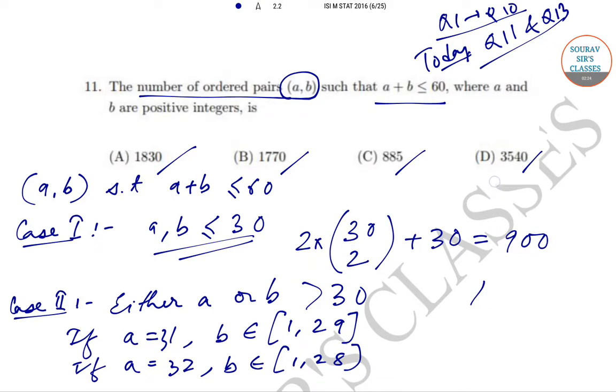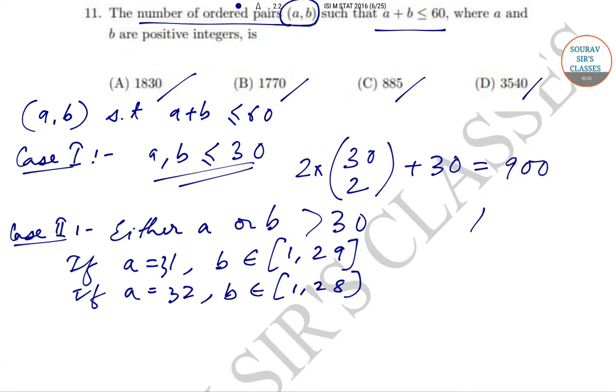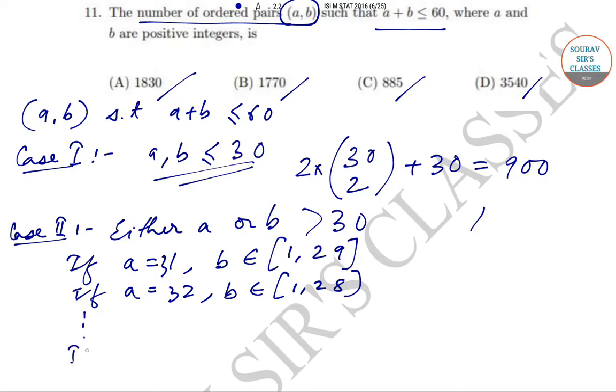Up till a is equal to 59. In that case b will be the singleton set {1}.